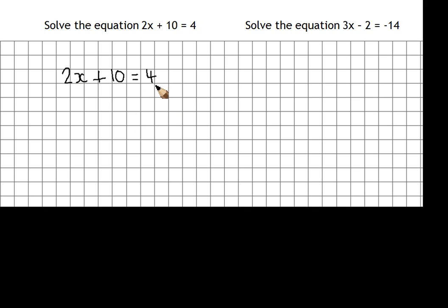2 times something plus 10 gives us 4. So the first thing I'm going to do is undo, or do the inverse of adding 10, which is subtracting 10. And to keep my equation balanced, I'm going to subtract 10 from the other side. So that leaves me with 2x equals, now 4 take away 10, start at 4 and count down 10, gets me to minus 6.